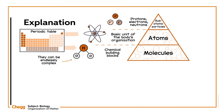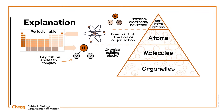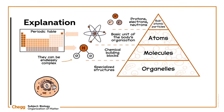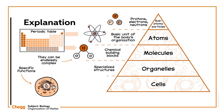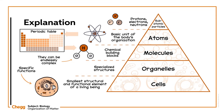Eventually, groups of molecules go together to form organelles, which are membrane-bound specialised structures. They exist within cells in order to perform specific functions, and these organelles combine in various ways to create cells. Cells are thought of as the smallest structural and functional element of a living being. Some organisms are unicellular, meaning they are only one cell, while many others, like humans, are multicellular, composed of many cells working together.